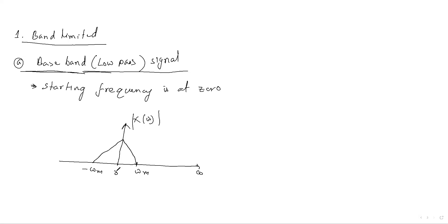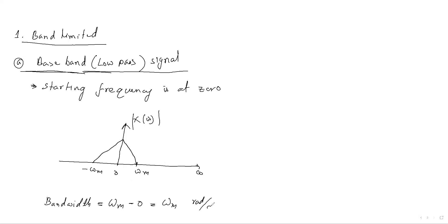So what is the bandwidth of this baseband signal X(omega)? On the positive side, the highest frequency is omega m and the lowest frequency is zero. So the bandwidth is omega m radians per second.